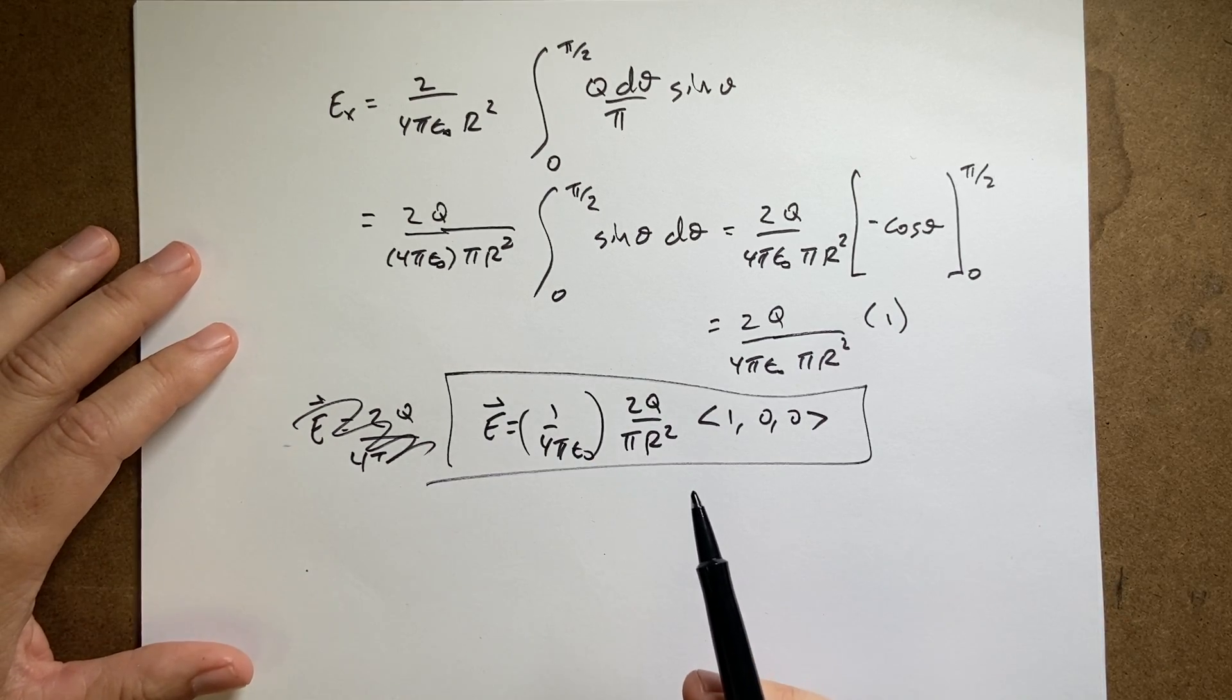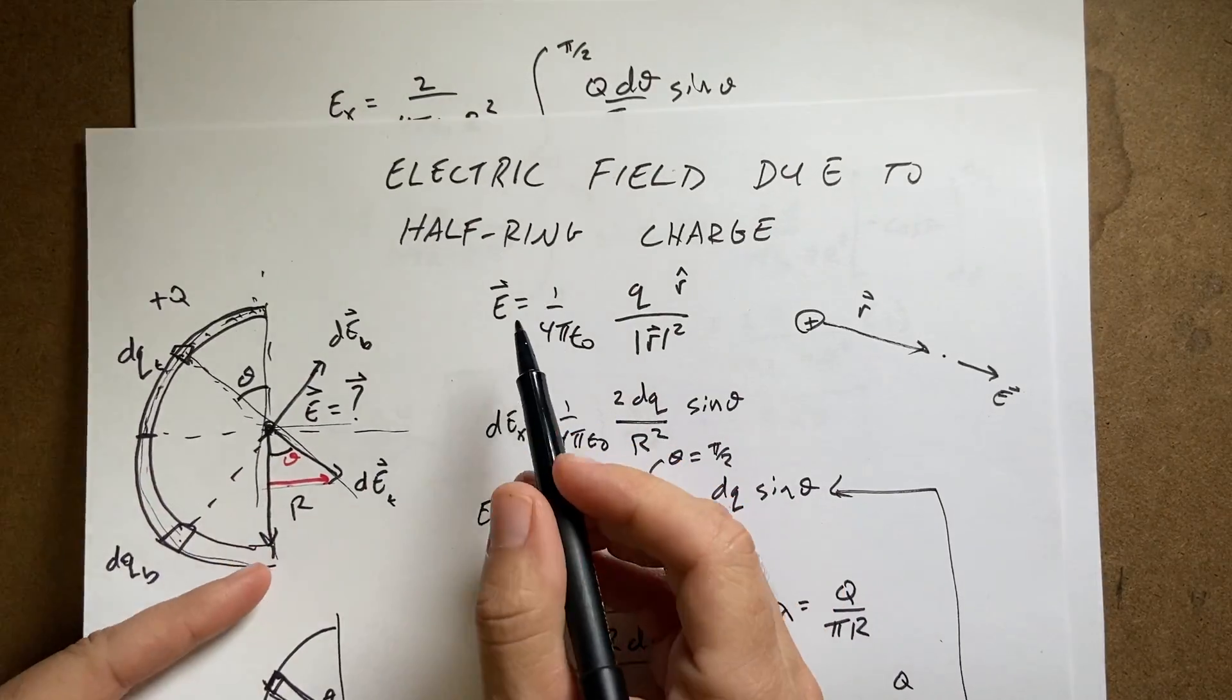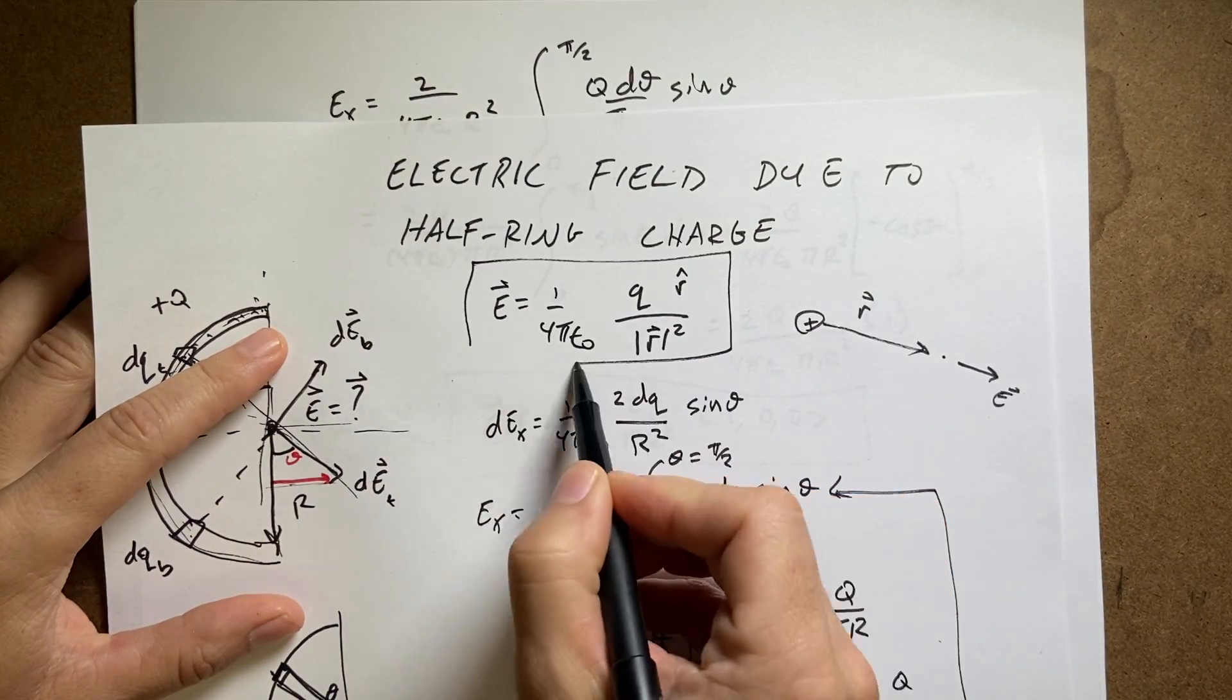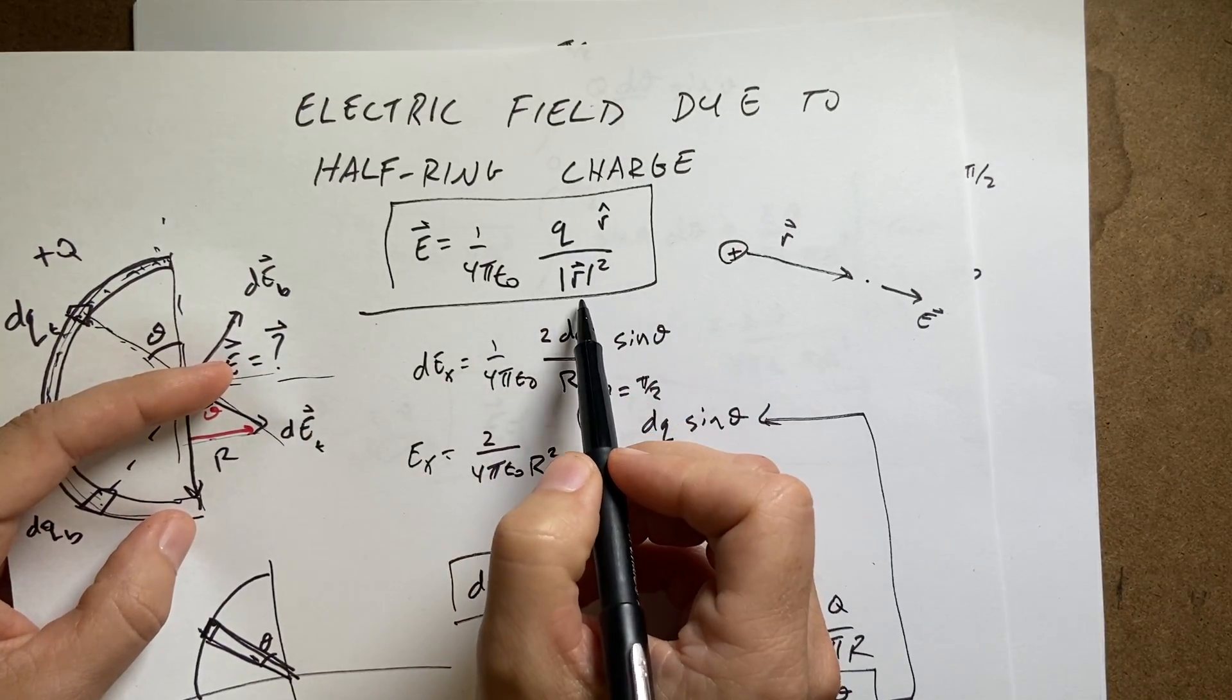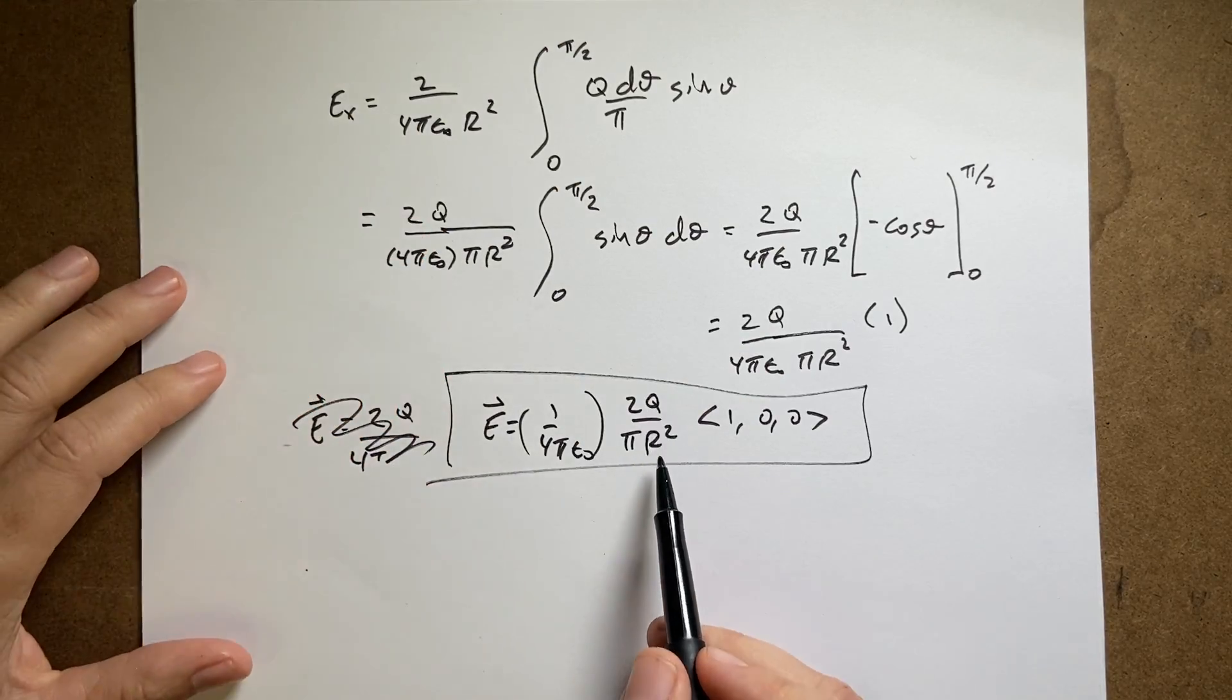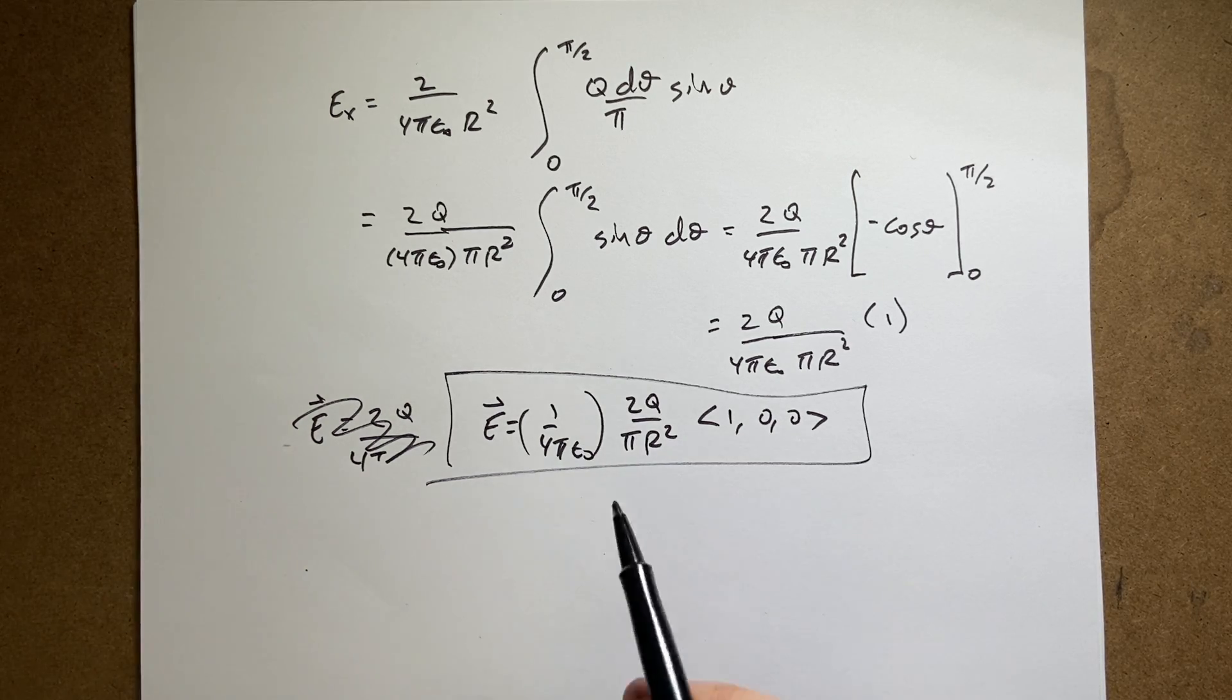Now, let's check, right? It should have the same units as my electric field due to a point charge. So it should be 1 over 4 pi epsilon naught, q over r squared. I got that. So I have q over r squared. I do have the right units. 2 doesn't have units, pi doesn't have units. So this has the right units. That's good.